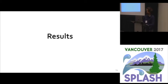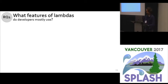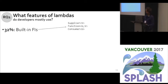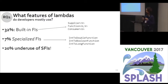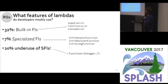For research question one on what features of lambdas are used: we found that when lambdas could be bound to specialized functional interfaces like IntToDoubleFunction, 20% of the time developers were using the generic type functional interface instead. So the hypothesis was correct — developers are underusing specialized type functional interfaces.